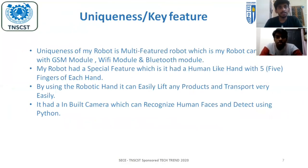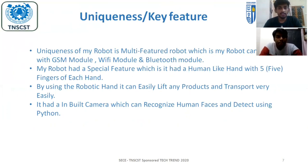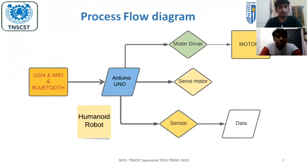Our project's uniqueness and key feature: the Humanaid Robot is a multi-feature robot. It can be controlled with a GSM module, Wi-Fi module, and Bluetooth module. The robot has a special feature — a human-like hand with five fingers. By using the robotic hand, it can easily lift and transport products very easily.